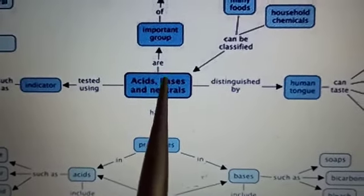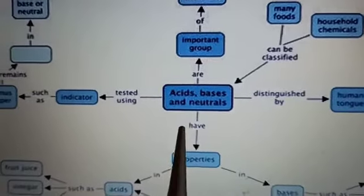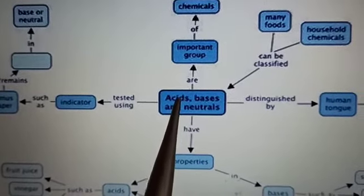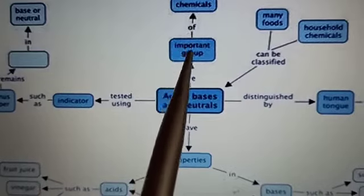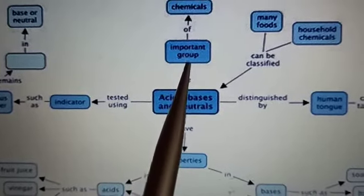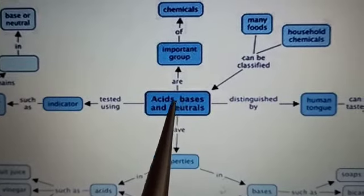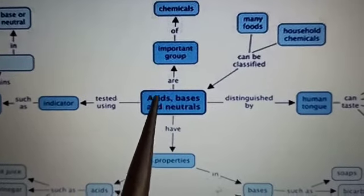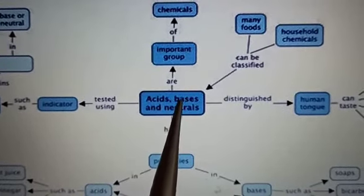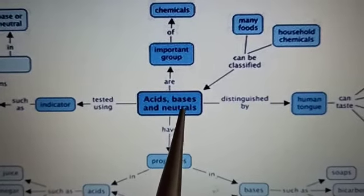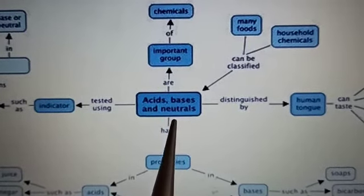See here this is a chart and it is very interesting to learn. In this way the acids, bases and neutrals. These are the chemicals of important groups: acids, bases and neutrals. Neutrals means neither acidic nor basic.